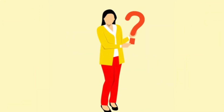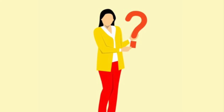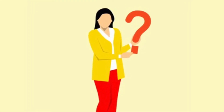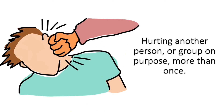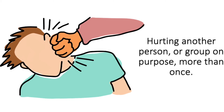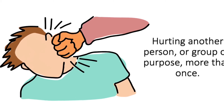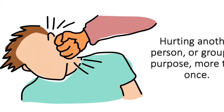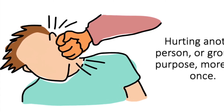So, what is bullying? A lot of people have their own definition of what bullying is, and today I will explain along with examples and the different types there are. Bullying is hurting another person or group on purpose more than once. This includes punching, shoving, and other acts of using physical violence to hurt people, spreading bad rumors, and keeping certain people out of a group.